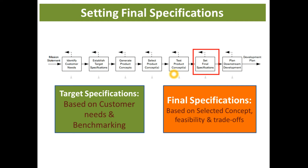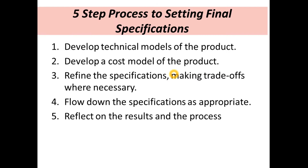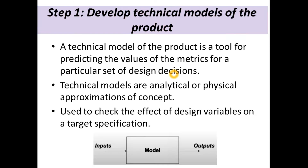There are five steps to create the final specification. Let us discuss them one by one. The first step is to develop a technical model of the product.